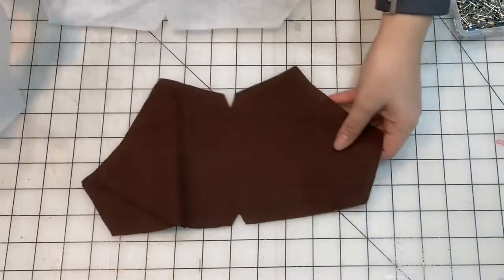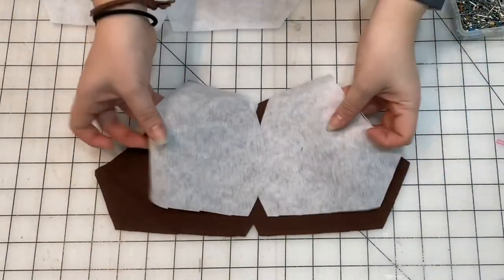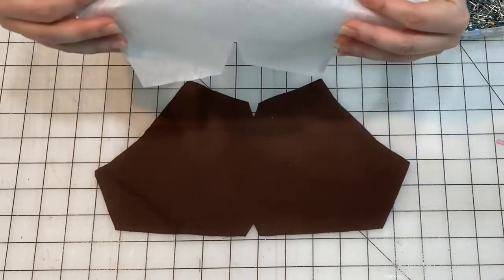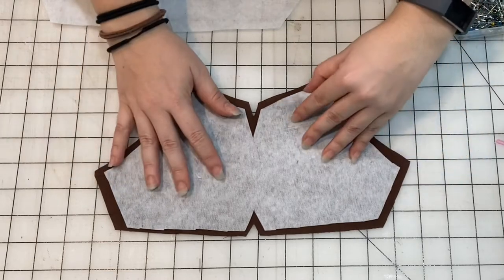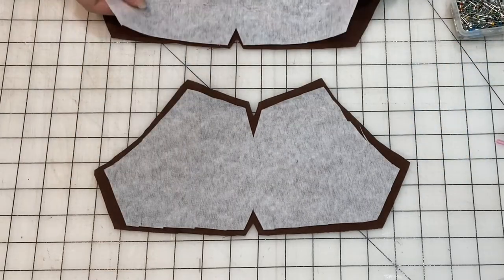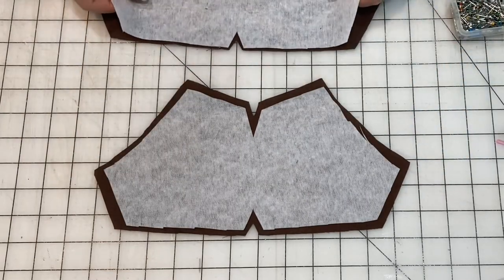Now we are just going to take our brown pieces of fabric and place our interfacing on top of it. This interfacing is fusible iron-on so I'm just going to iron this onto the fabric and we will move on.